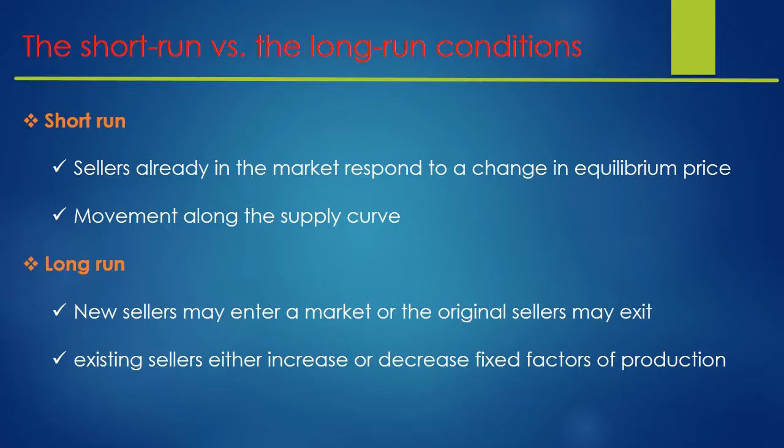Last but not least, existing sellers either increase or decrease fixed factors of production. We've seen how the economic situation — what happened in 2008 — caused people to lose their jobs and properties, and this will have a long-run effect on the power that people have to acquire products and services.